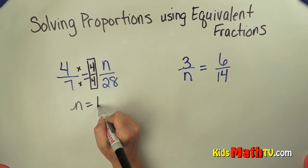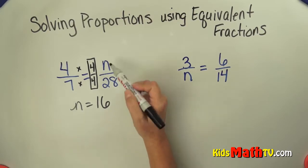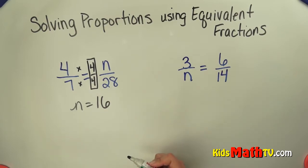So n in this case equals 16. This unknown quantity is 16. 4 to 7 is equivalent to 16 to 88. That's one example.